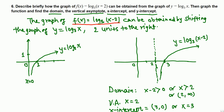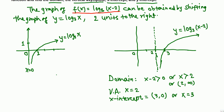For the y-intercept: there is none, because this graph does not intersect the y-axis. If the graph were shifted to the left it would intersect the y-axis, but in this case it does not, so y-intercept is none.